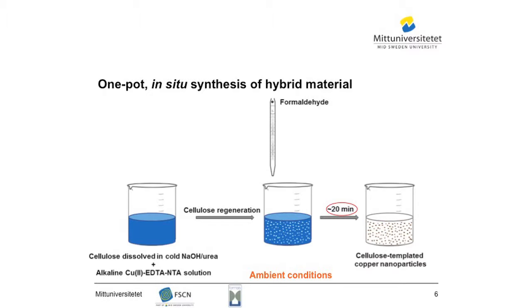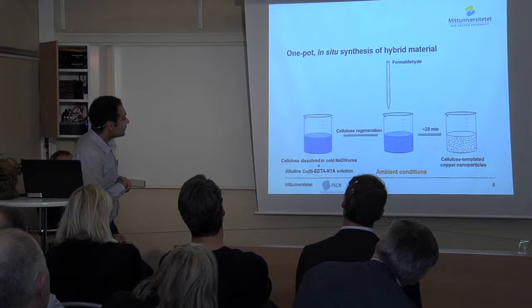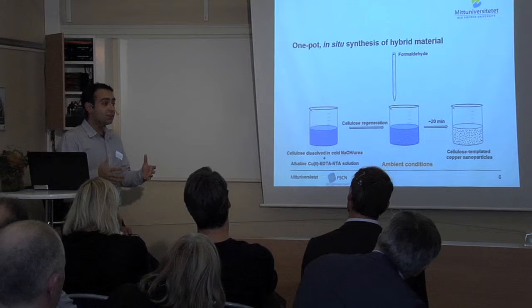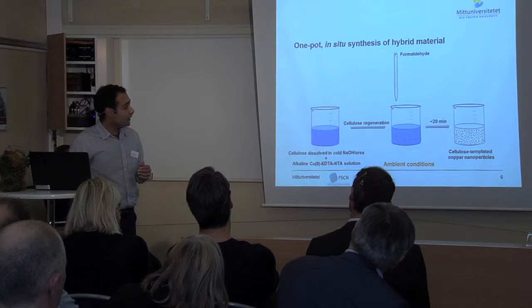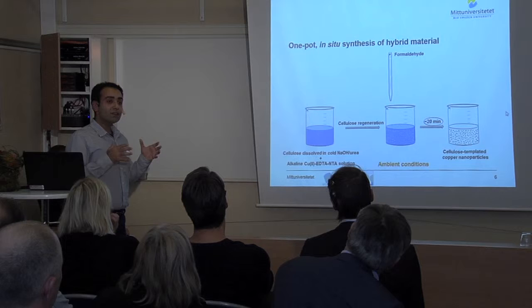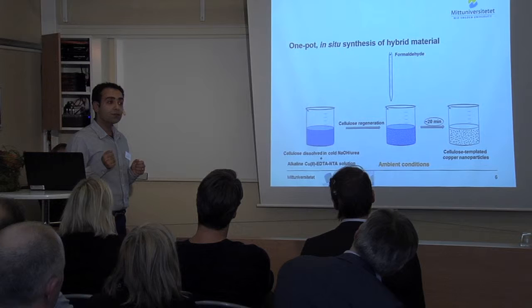Here I'm going to present the synthesis route that we developed to synthesize a metal nanoparticle cellulose hybrid material. In our approach, we start from a water-based cellulose solution as a source of cellulose and mix it with a copper chelating ligand complex solution as a source of copper. Then by adding acetic acid solution, cellulose is regenerated in this mixed solution. Formaldehyde was used as a reducing agent and added to the mixture with regenerated cellulose to reduce the copper ions. In less than 20 minutes, the hybrid material is synthesized. The synthesis can be easily monitored by observing the gradually fading blue color of the copper solution, which becomes colorless at the end of the experiment, while the white color of regenerated cellulose changes to dark brown indicating formation of metallic copper.